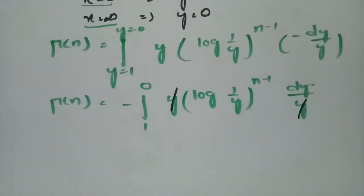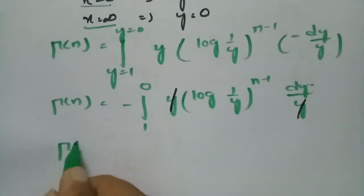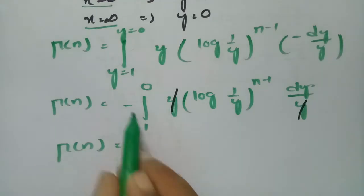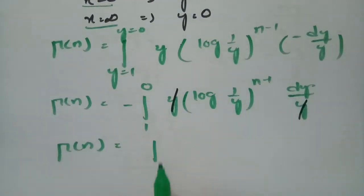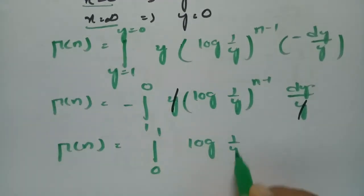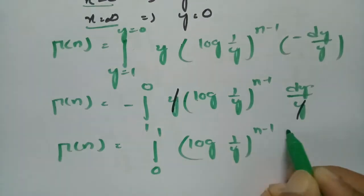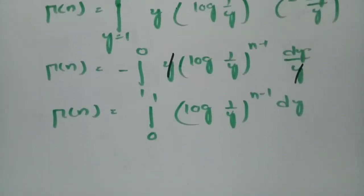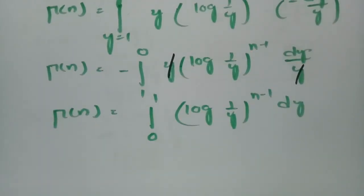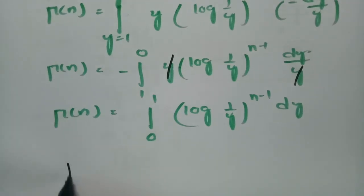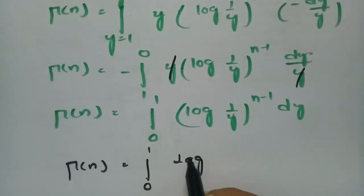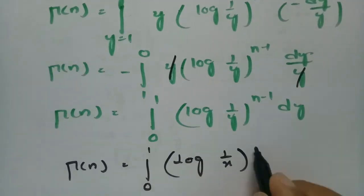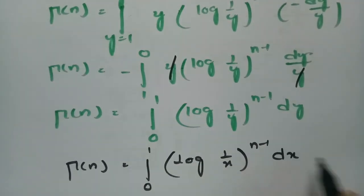After cancelling y, we bring out the minus sign and interchange the lower and upper limits — changing from 1 to 0, to 0 to 1 — with the minus sign. So the result is gamma n equals the integral from 0 to 1 of log(1/y) to the power n minus 1 into dy. Writing this in terms of x: